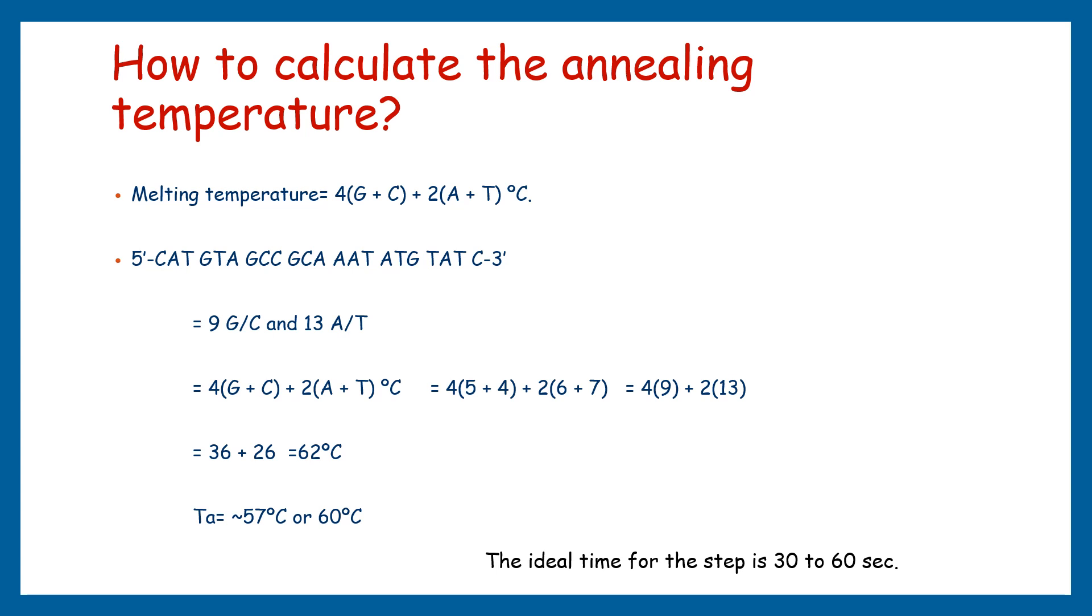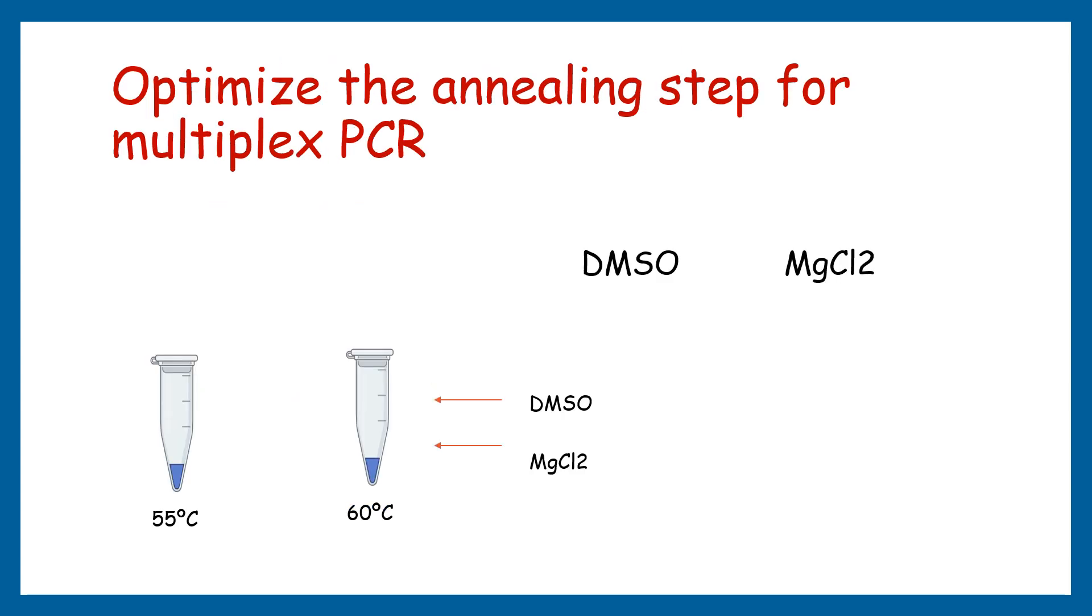Besides setting the temperature for primer binding, the time duration for annealing is indeed important. The ideal time for the step is 30 to 60 seconds. The change in time may influence results negatively. For instance, even though we have a good annealing point but perform the step for 2 minutes, it might produce non-specific bands and primer dimers.